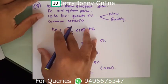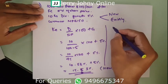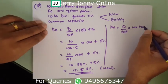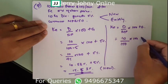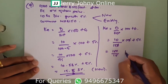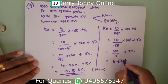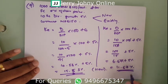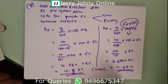For existing equity, the current market price is ₹150. Using the same formula but with MP instead of NP: KE equals D divided by MP into 100, plus G = 10 divided by 150 into 100, plus 5% = 6.67% plus 5% = 11.67%. So the cost of existing equity share capital is 11.67%.